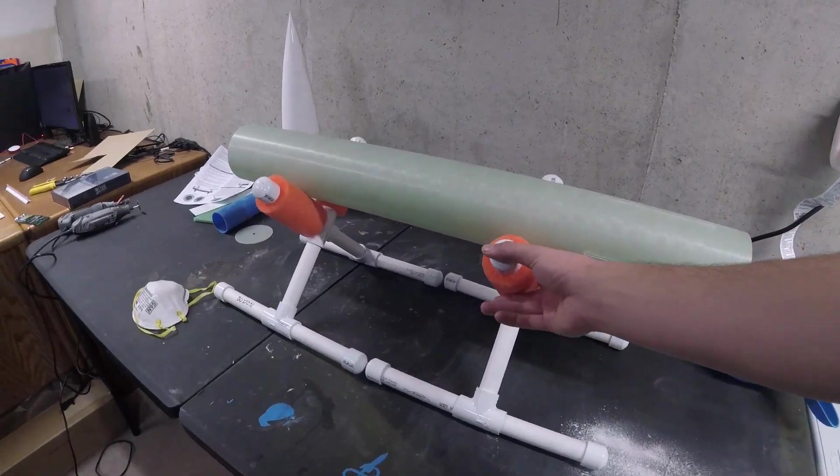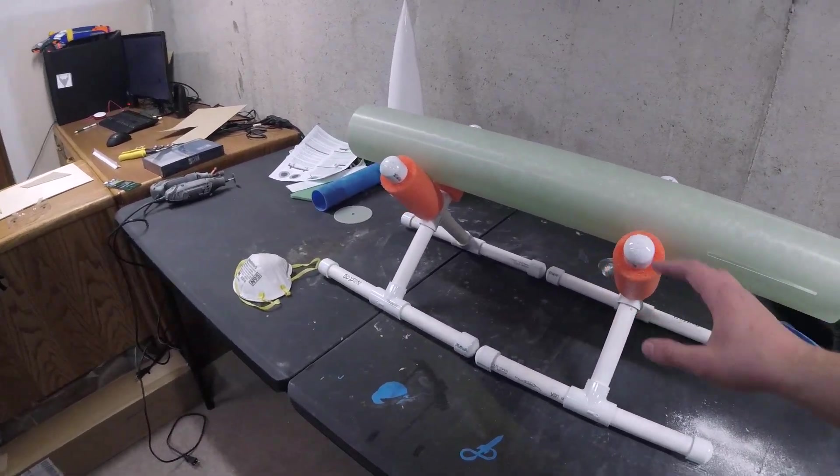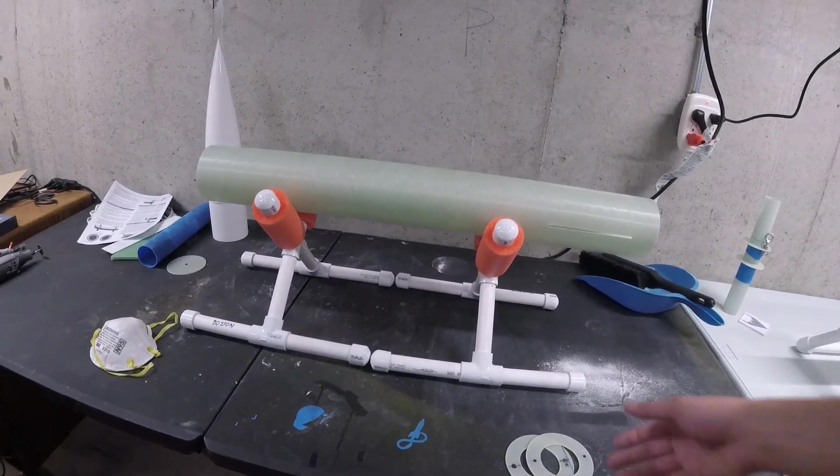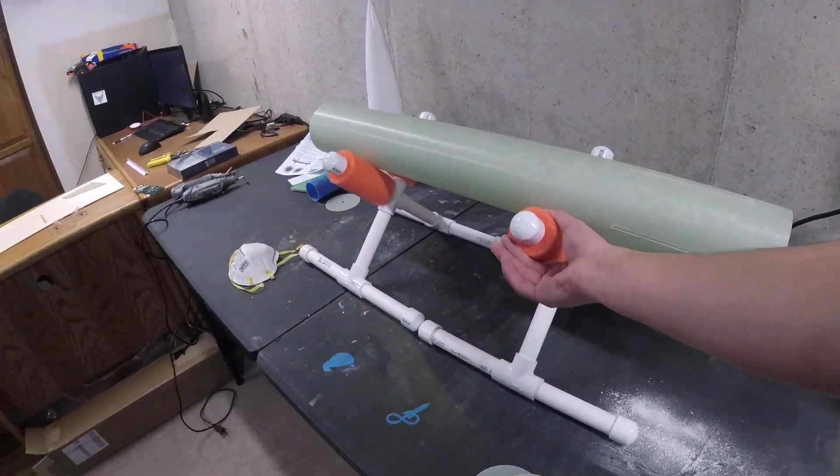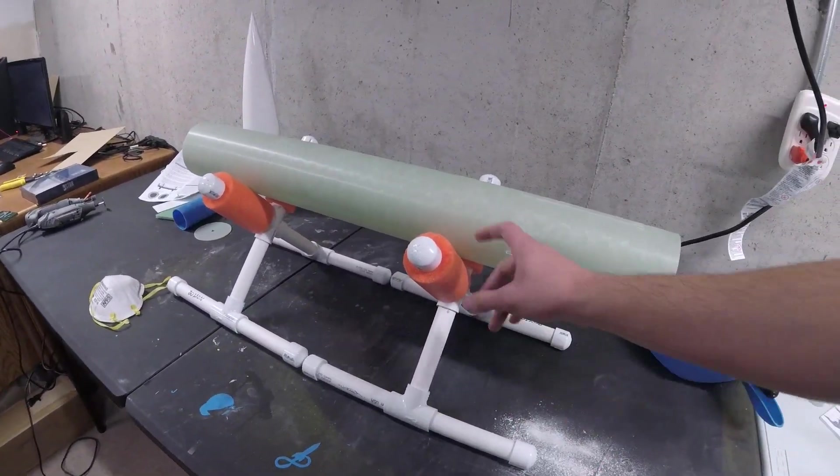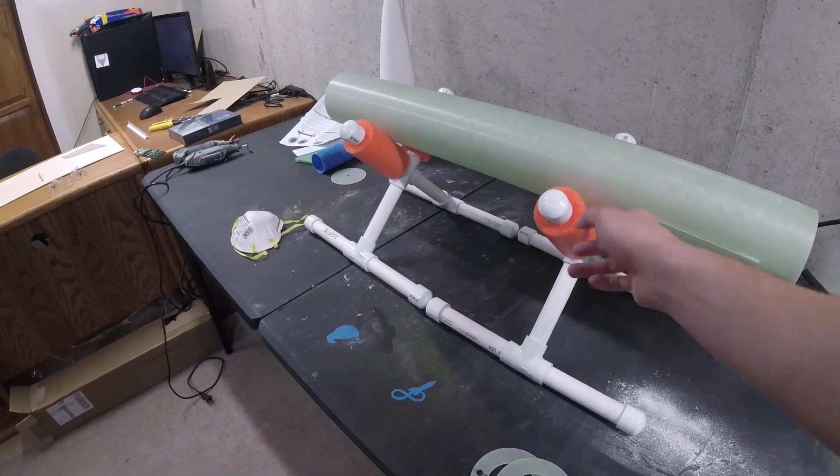But these are just two different styles of rocket stands and another thing you can see is I have foam on this one. I've tried different types of foam. I've used pipe insulation but I found that pool noodles work the best.